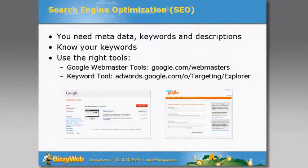For SEO, you need metadata, keywords, and descriptions. You need to make sure your website is written so that search engines can find you. Metadata is mostly titles and descriptions now. If you go into the back end of your website and you list all the keywords you think anybody might find you on, it's going to help you none — Google ignores keywords now. In fact, you can actually get downgraded if you try to stuff your website with keywords.